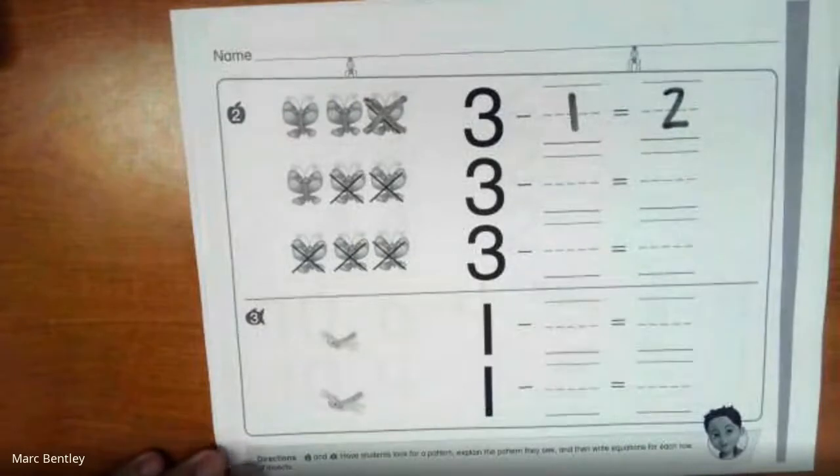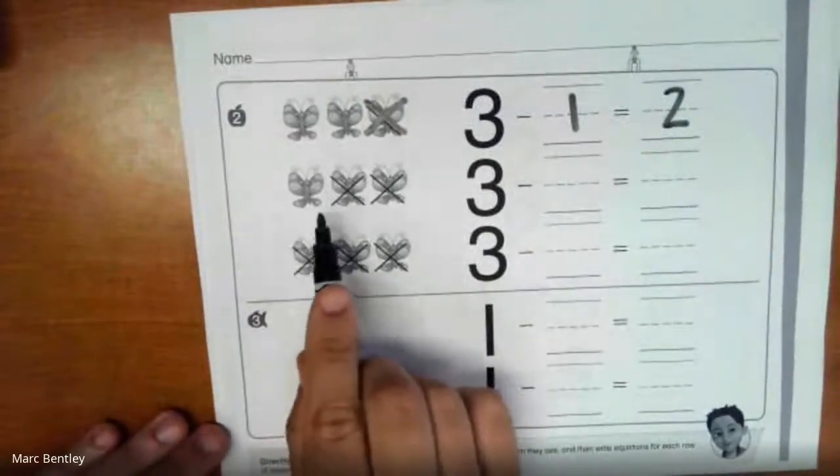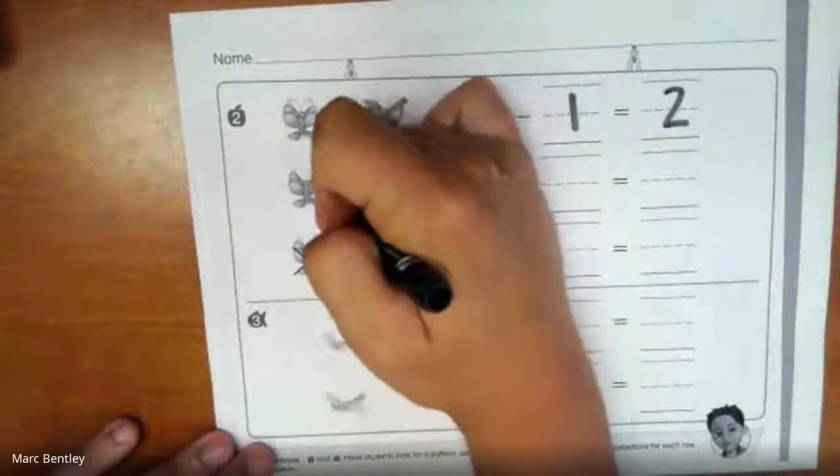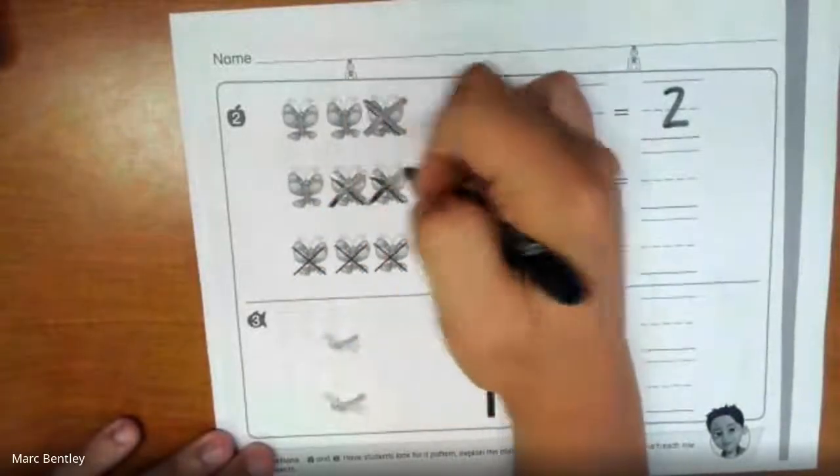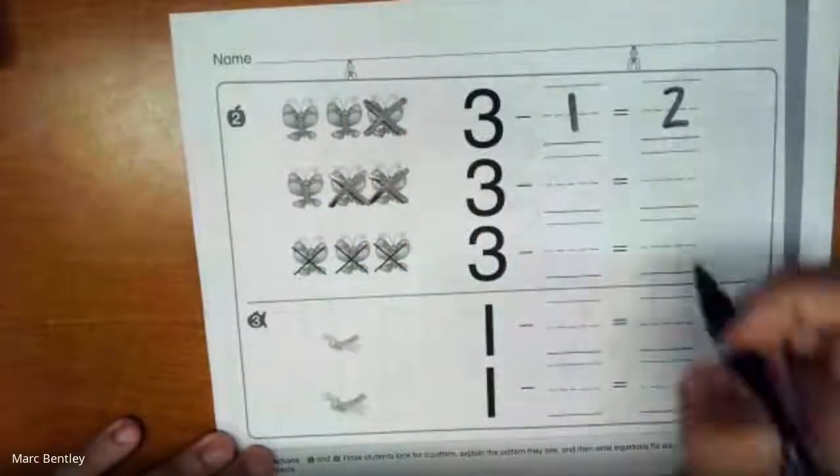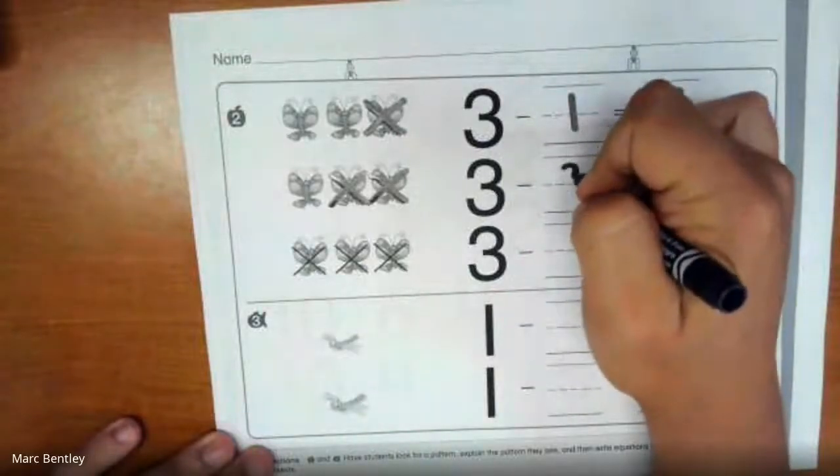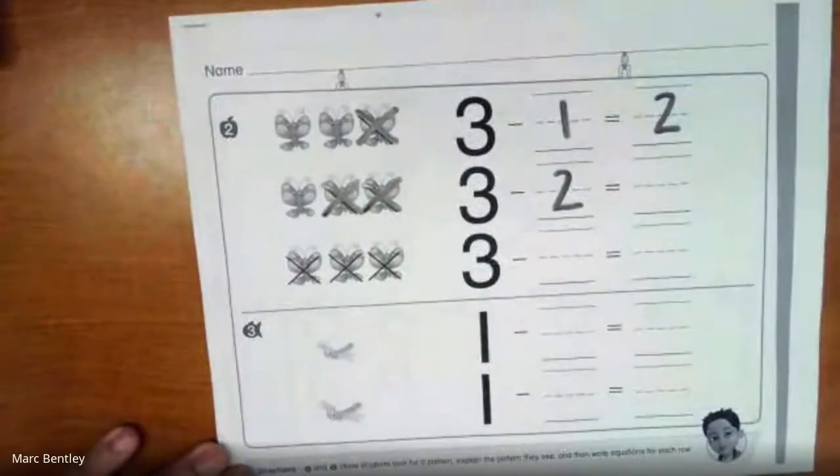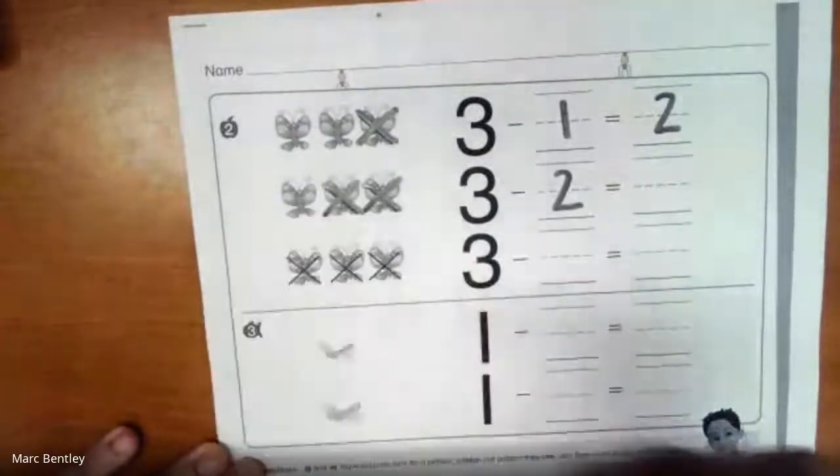The next set of butterflies, we have now an x through 2 of them. We had 3 to start off with. We've taken away 2. Maybe they flew away. And we are left with 1.